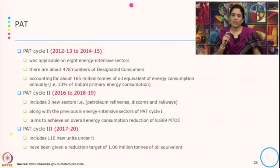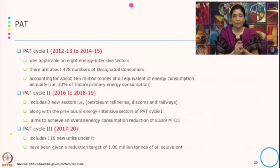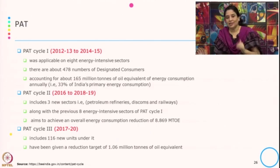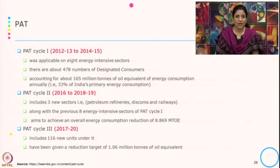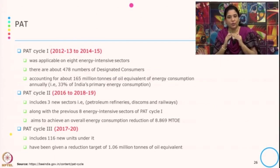PAT cycle 2, from 2016 to 2018-19, included three new sectors — petroleum refinery, DISCOMs and railways — along with the previous eight energy intensive sectors from PAT cycle 1, aiming to achieve an overall energy consumption reduction of 8.869 million metric ton equivalent. PAT cycle 3, from 2017 to 2020, included all previous DCs along with 116 new units, with a reduction target of 1.06 million tons of oil equivalent.